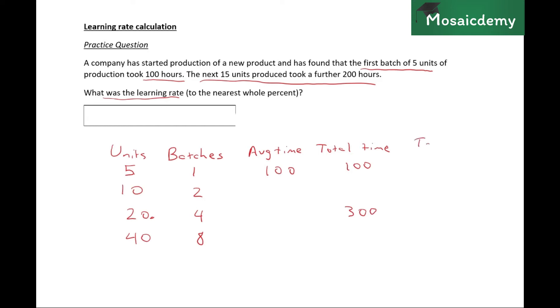So we'll make another column for total time and fill it out based on our base values for the table. So total time for the first unit is a, right? Total time for the second unit or batch is 2ar. For the third one, for 4, ar squared, and then 8, ar cubed, right? So 4ar squared is equal to 300.